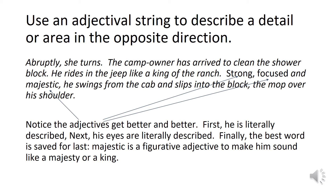Abruptly — that means all of a sudden — she turns. The camp owner has arrived to clean the shower block. He rides in the jeep like a king of the ranch. Strong, focused and majestic. He swings from the cab and slips into the block, the mop over his shoulder. If you notice, this adjectival string is not the only method used in this short description. You can see the camp owner has been described like a king in the ranch — there's your simile. So you don't just have to use adjectives in this paragraph. You can also bring in your simile, metaphor and personification skills from previous lessons and layer them up to make it more exciting and create a clearer picture for your readers.